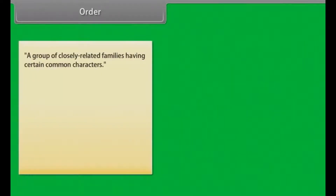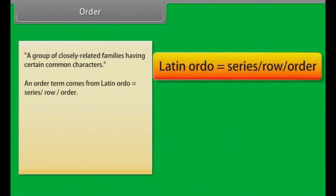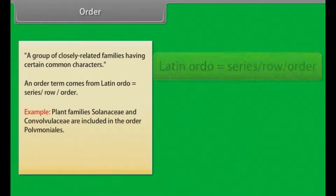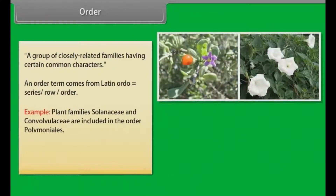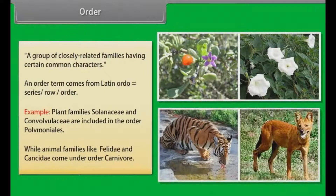Order is a group of closely related families having certain common characters. The term order comes from Latin 'ordo,' meaning series, row, or order. For example, plant families Solanaceae and Convolvulaceae are included in the order Polemoniales, while animal families like Felidae and Canidae come under the order Carnivora.